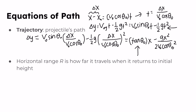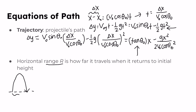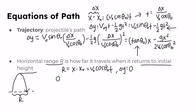We can use a similar approach to find the horizontal range of a projectile. The range R is the horizontal distance the projectile travels when it returns to its initial height. If we have a projectile following a parabolic path, R is the total horizontal distance from launch back to the original height. To find range, we set R equal to x minus x naught, which equals v naught cosine theta naught times t, and we set delta y = 0 since it returns to its initial height.